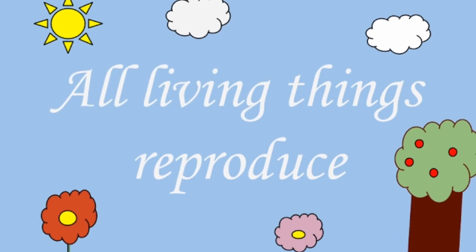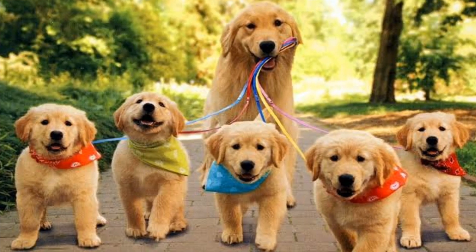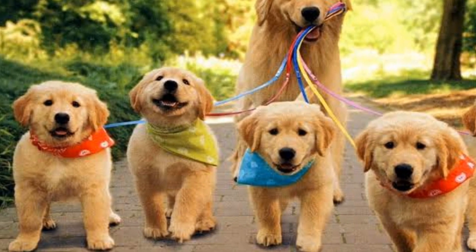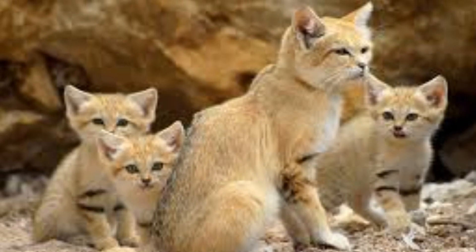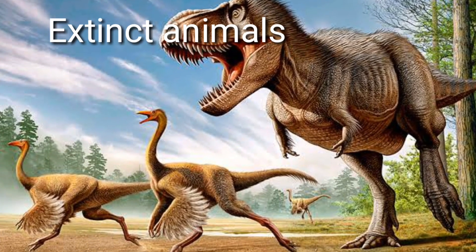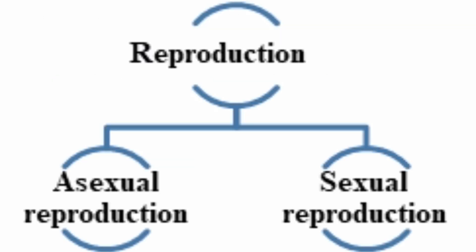The fourth characteristic of leaving things is that leaving things reproduce. All leaving things create their own kind by the process of reproduction, in order to maintain continuity and to ensure they are not extinct. Plants, animals, even bacteria too reproduce to maintain their continuity on the earth. Leaving things reproduce in two ways — asexual and sexual.